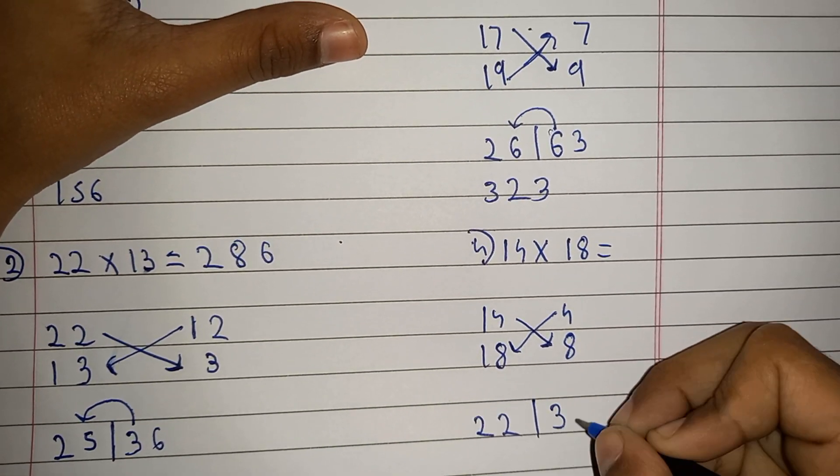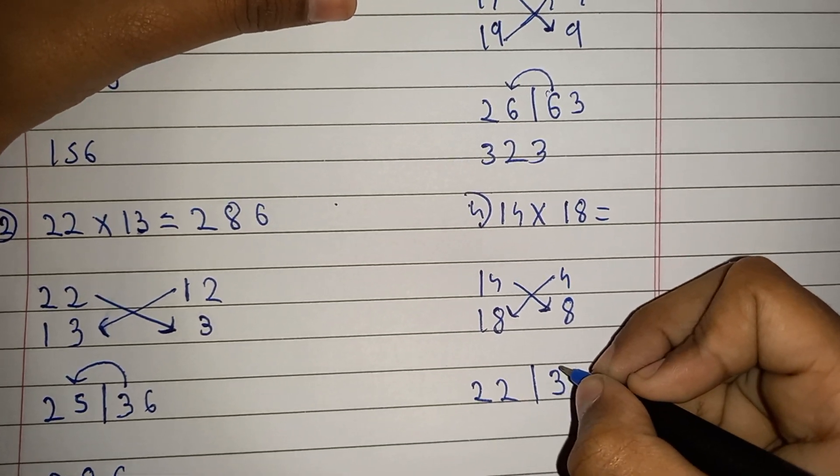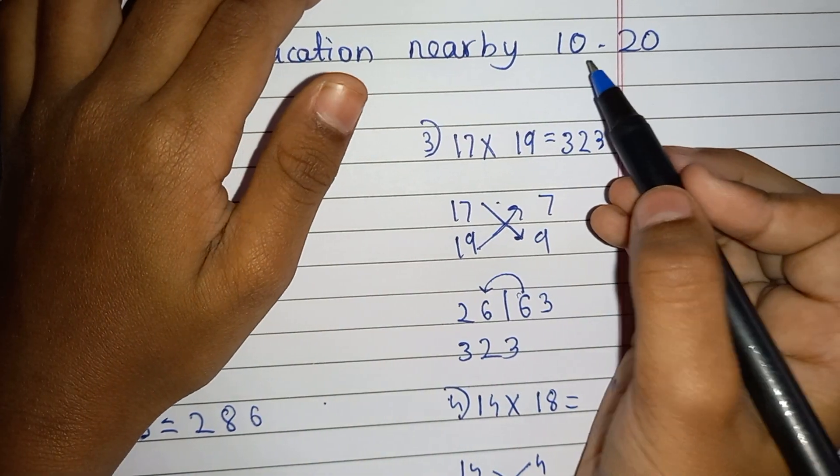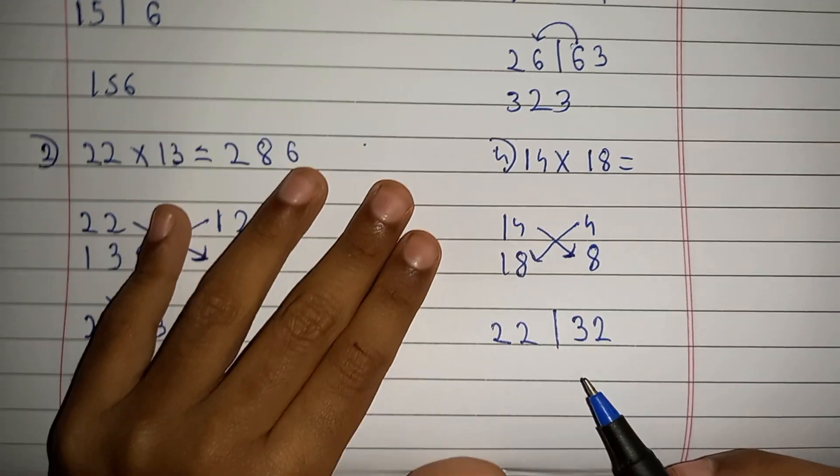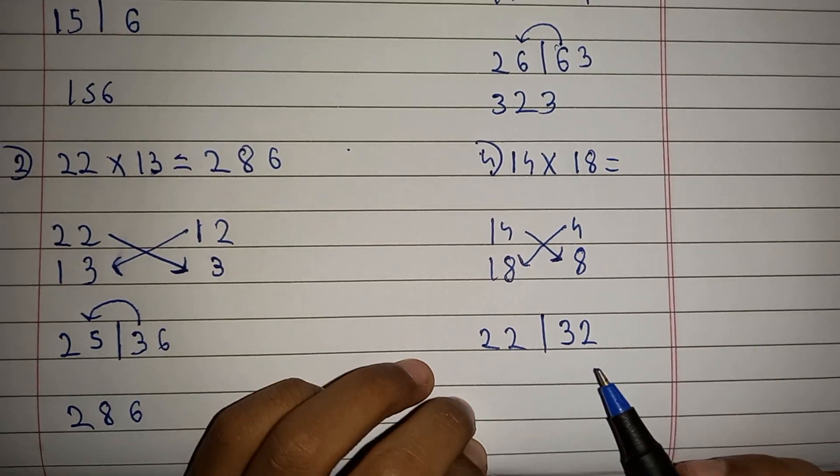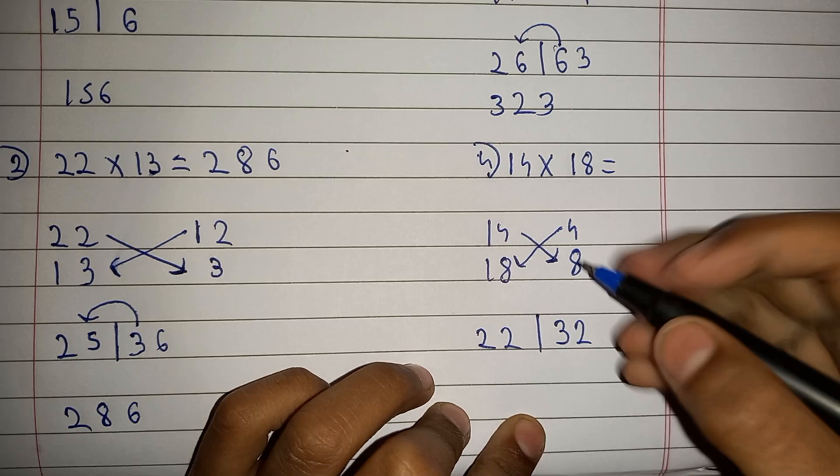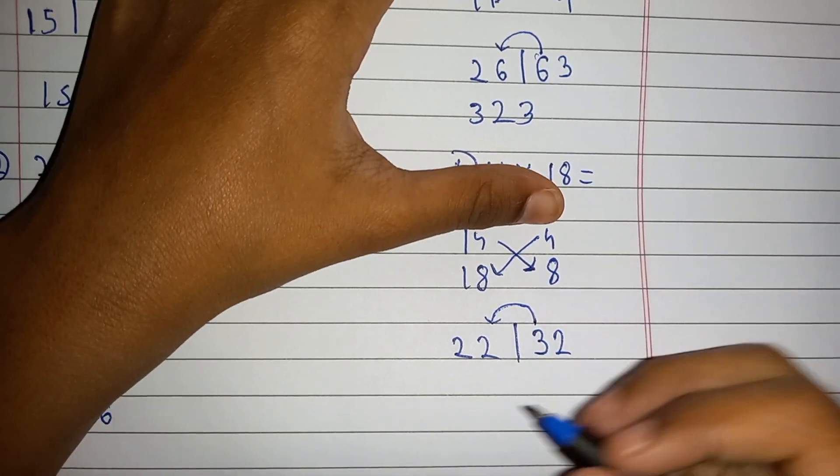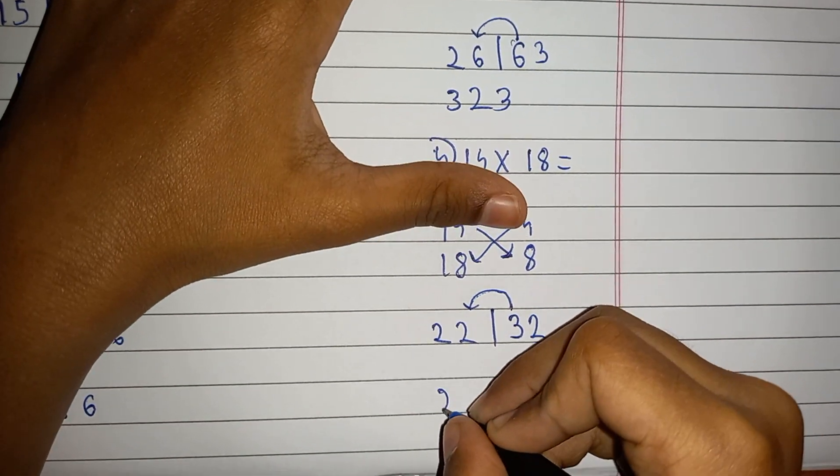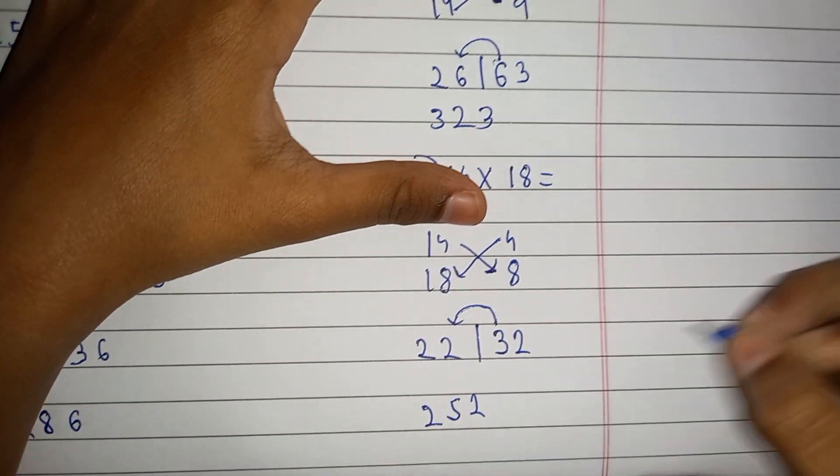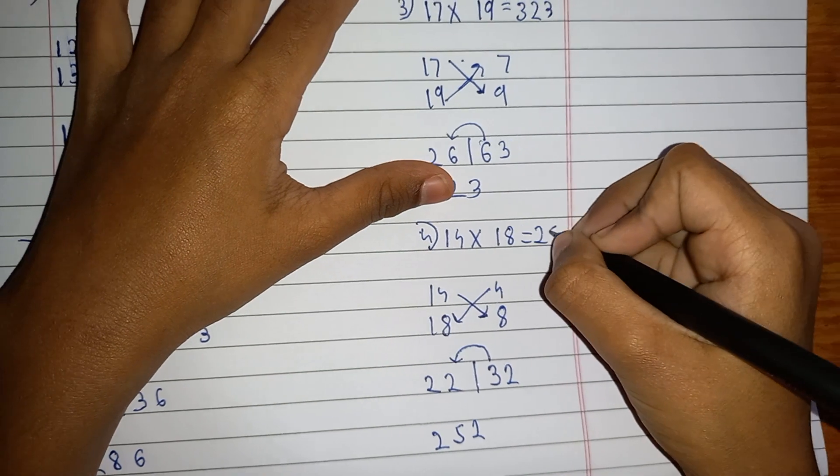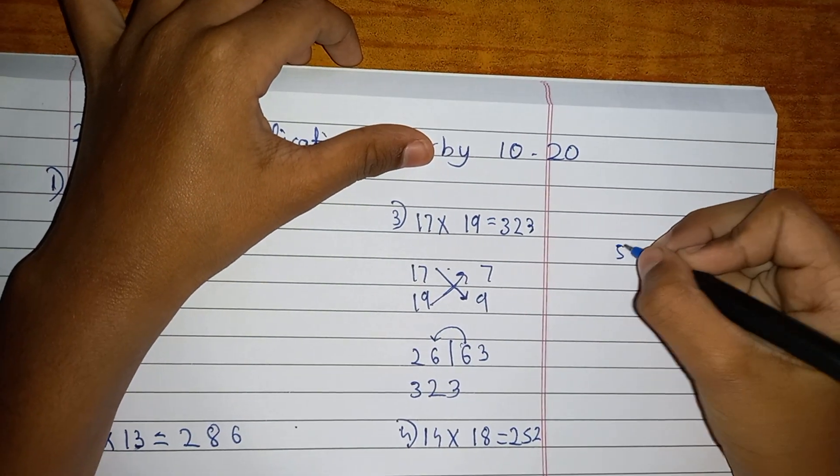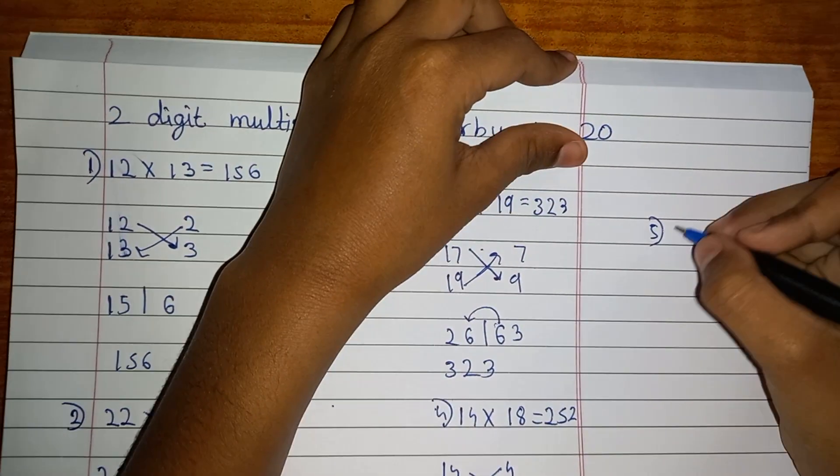Remember guys, it is 10. The number should not come two digits, it should come one digit. So take the tens digit and add to the next one digit. The answer will come 252, so the answer is 252.